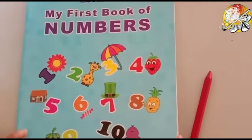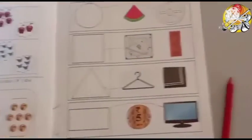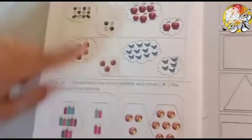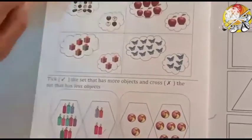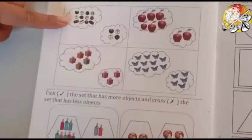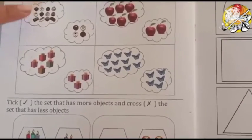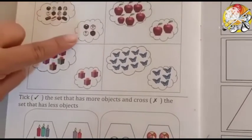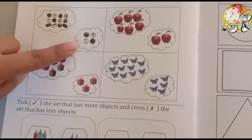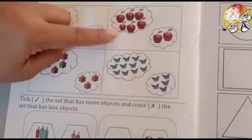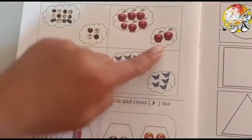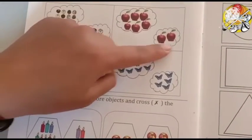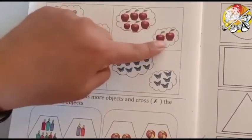This is our number book. In the number book, take out page number 636. Concept: more and less. See kids, in this box, two clouds are there. In one cloud, so many chocolates are there, so this is more. And in this cloud, less chocolates. Now apples. In one cloud, more apples. And this is less apples. Only two apples are there, so this is less apples.